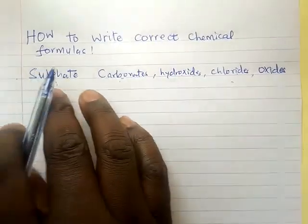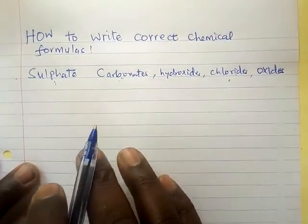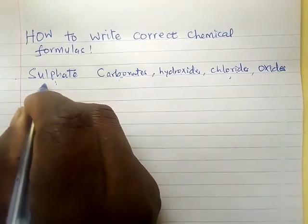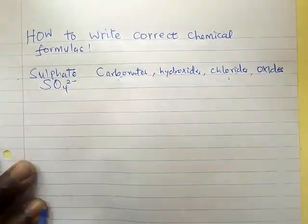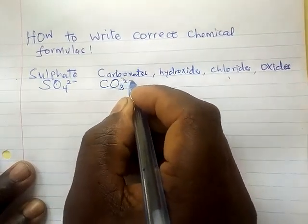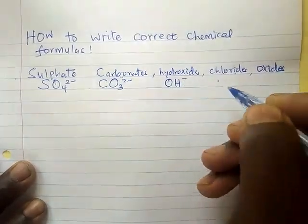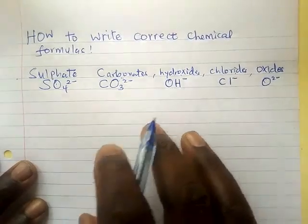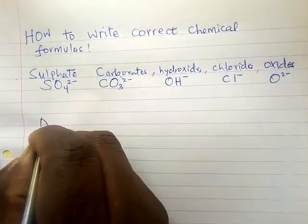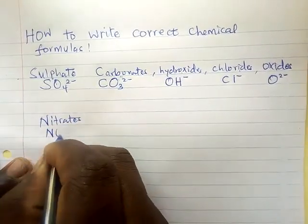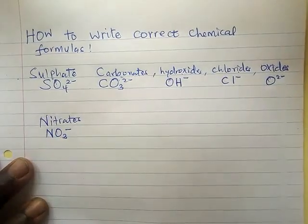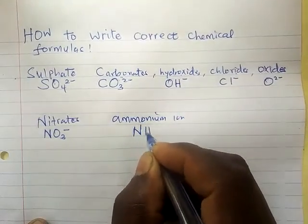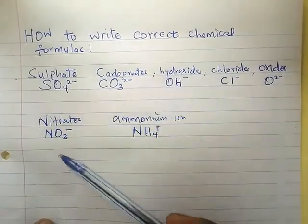We can have sodium sulfate, sodium carbonate, sodium hydroxide, sodium chloride, sodium oxide — these are what we call compounds. To write a correct chemical formula you need to know the radicals. Sulfate is SO4²⁻, carbonate is CO3²⁻, hydroxide is OH⁻, chloride is Cl⁻, oxide is O²⁻, nitrate is NO3⁻, and ammonium ion is NH4⁺.